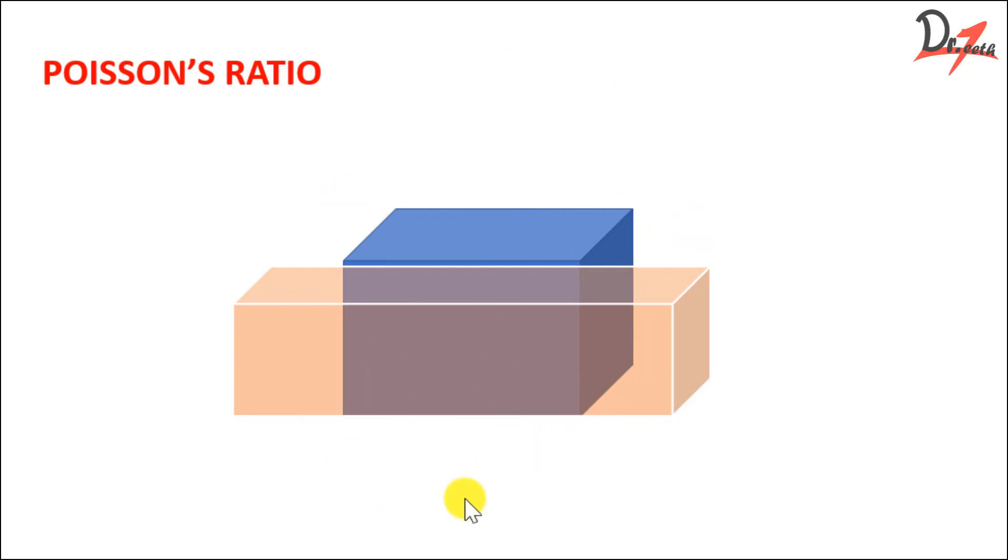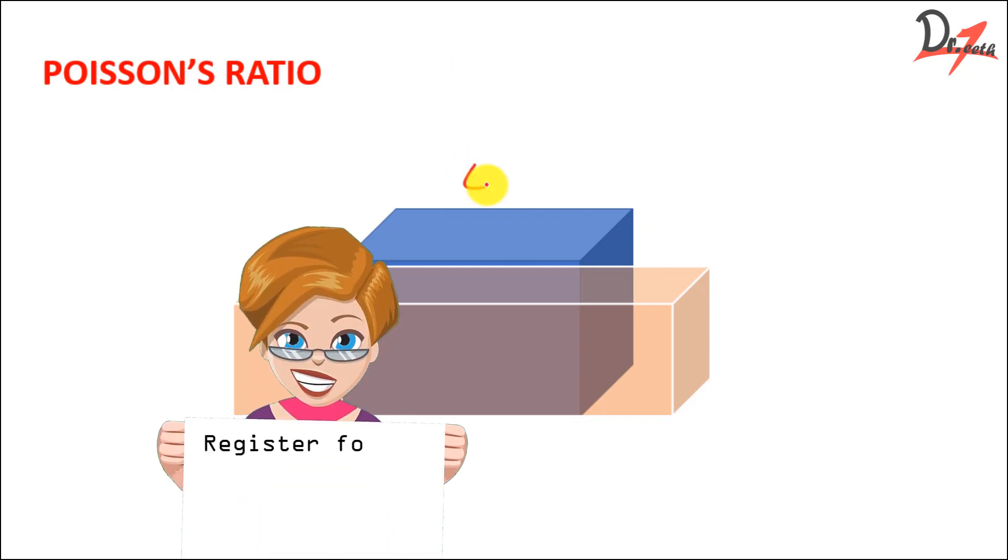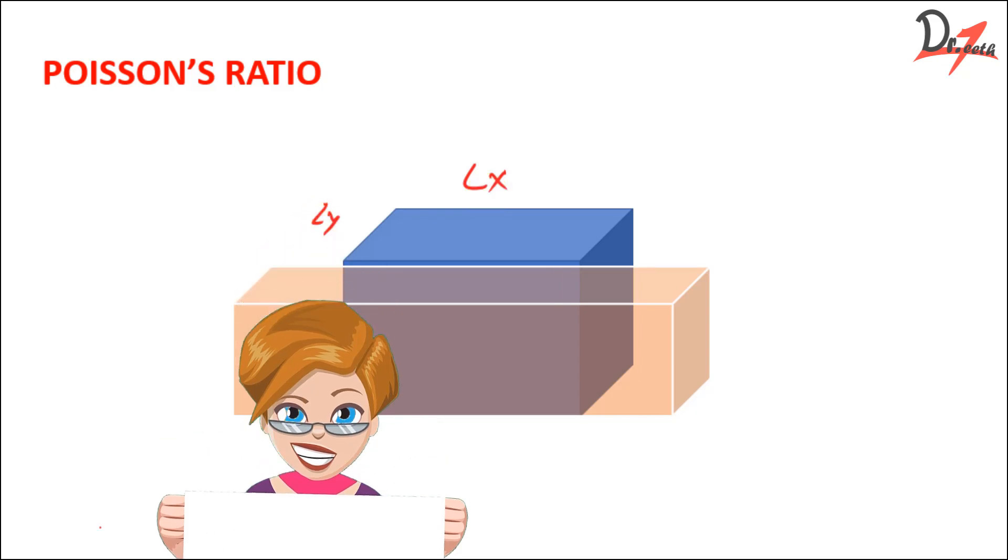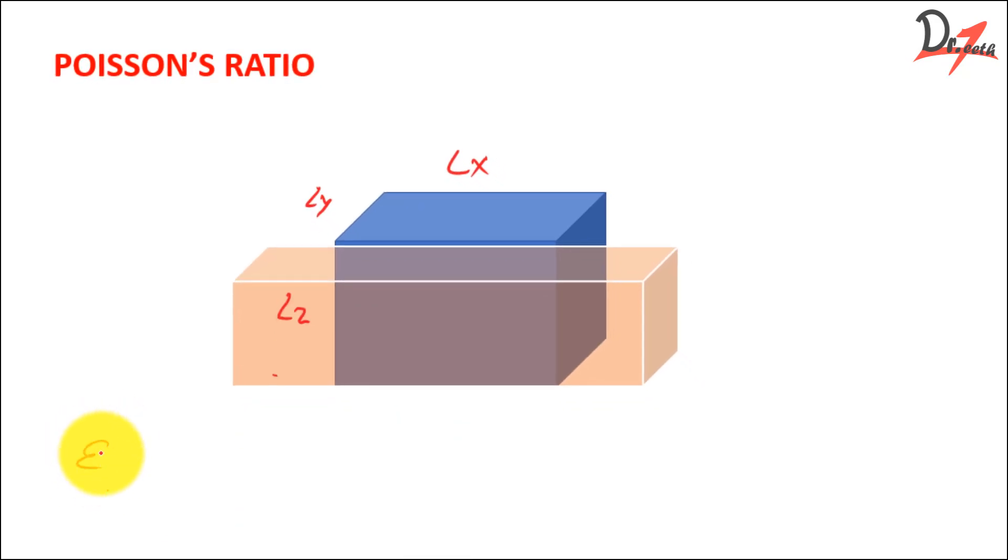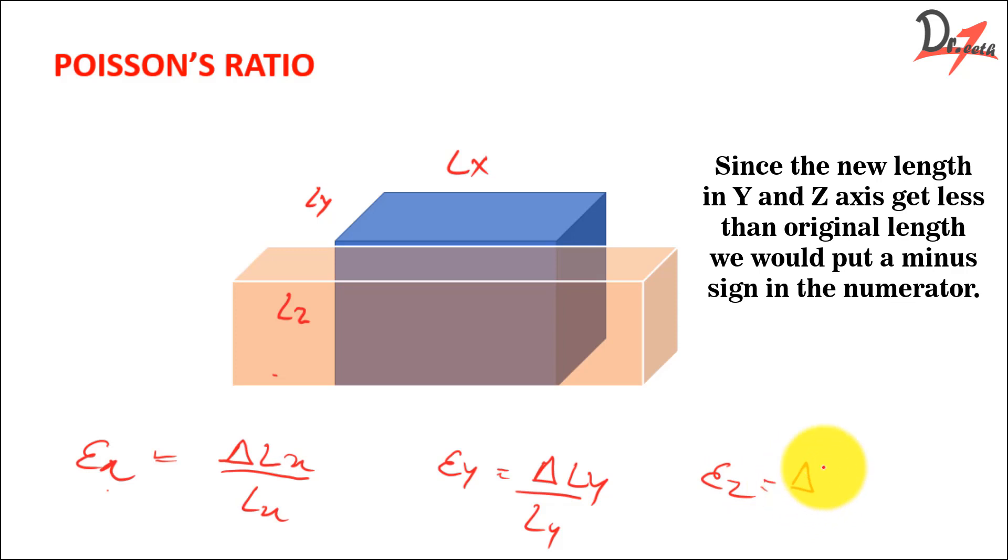So in all these directions we can measure the strain. So let me just quickly write it here. This was the Lx, this was the Ly and this was the Lz. Strain would be - this is epsilon. Strain in the x direction will be delta Lx divided by Lx. Change in the length by original length. Same here - delta Ly divided by Ly and delta Lz divided by Lz. So this is the strain which the object is facing.